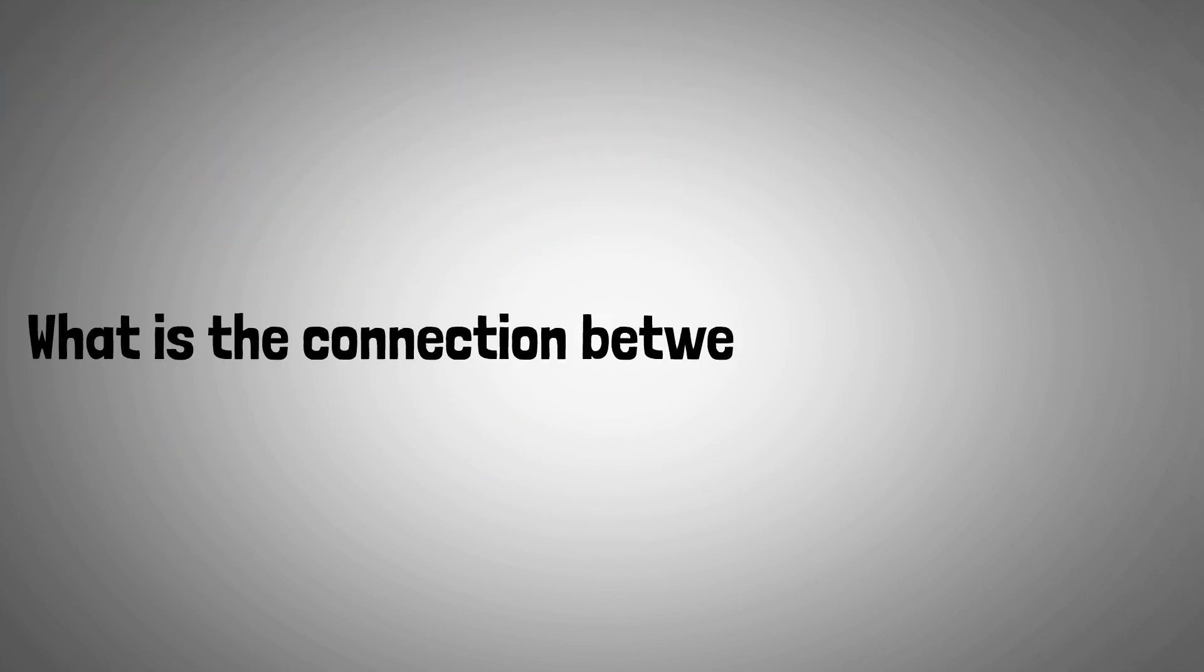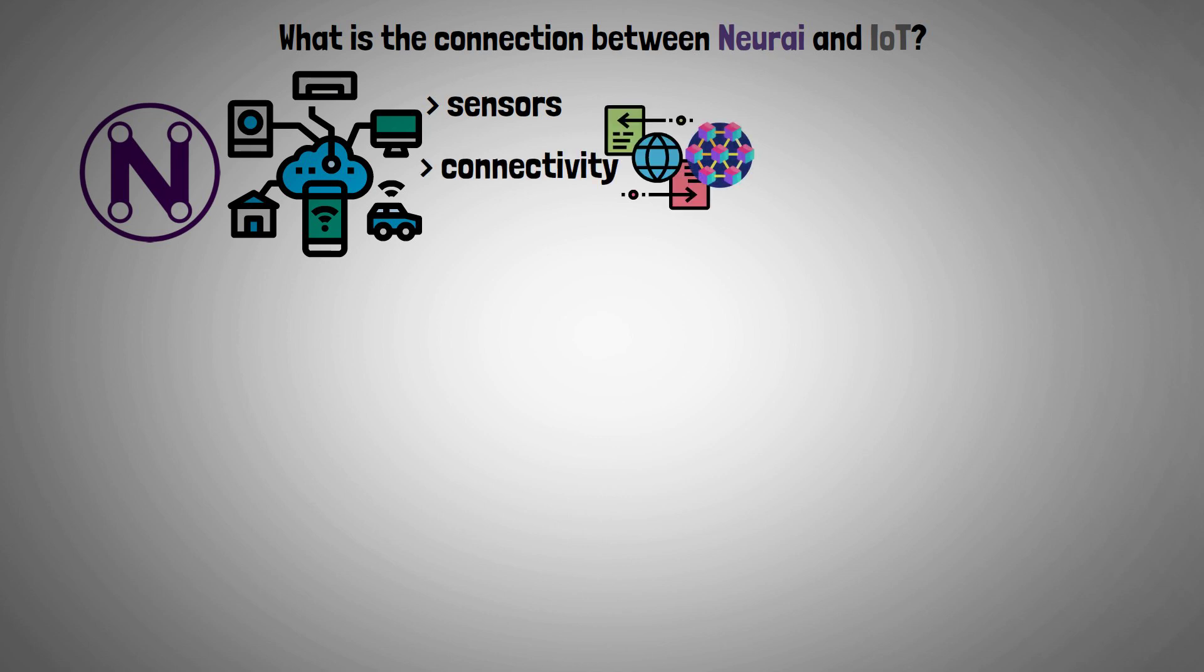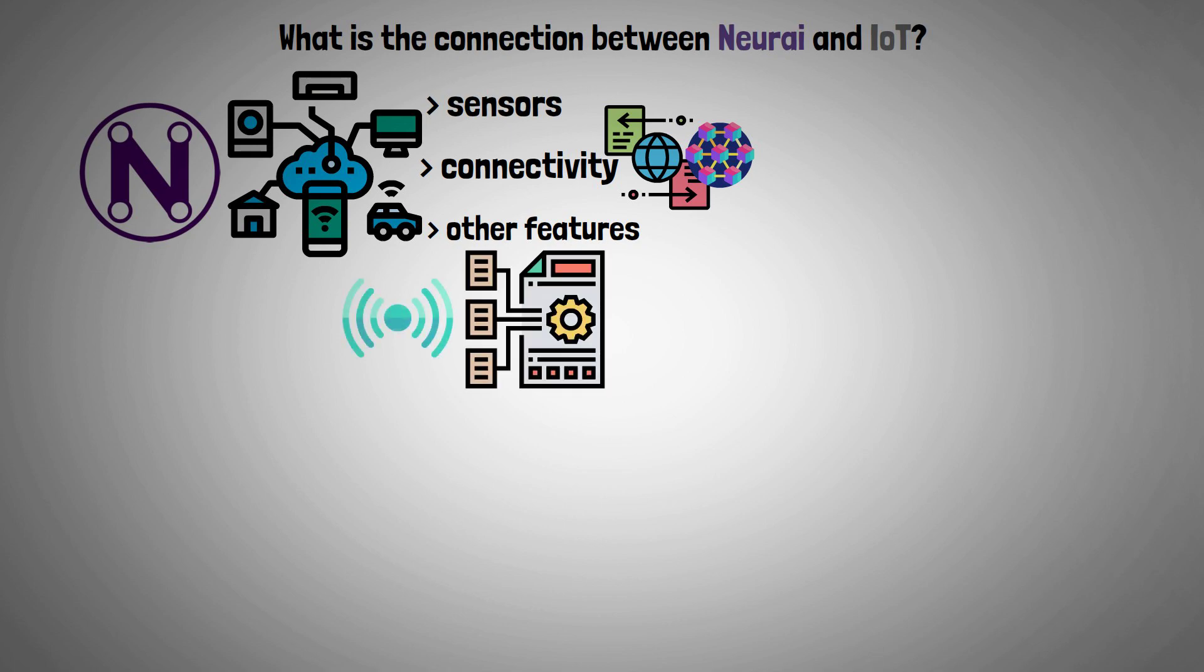So what is the connection between Nurei and IoT? IoT devices made specifically for Nurei have sensors, connectivity to send and receive data to the blockchain, and a number of other features that let them manage the data coming from the sensors and make use of the different AI models that are available for microcontrollers.